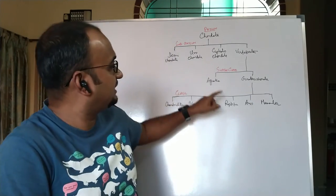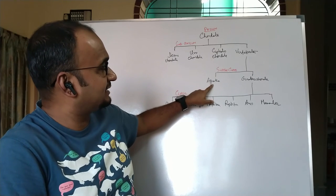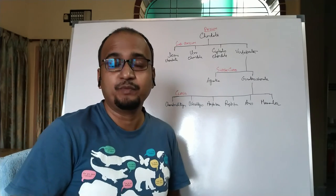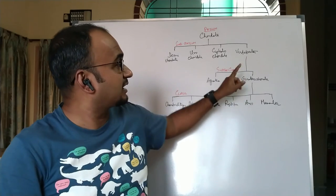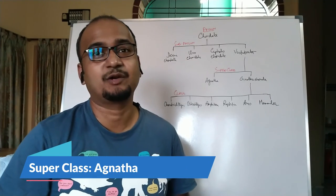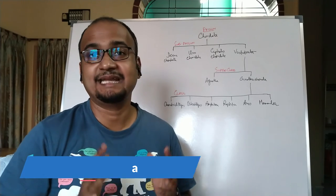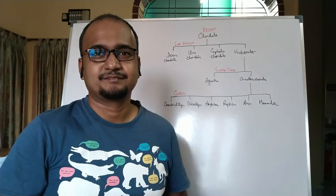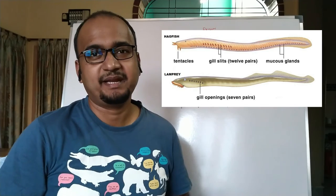Animals under Agnatha are without jaws and they lack paired limbs. The examples include lamprey and hagfish. If you have any query regarding this topic, please feel free to leave your comment below.